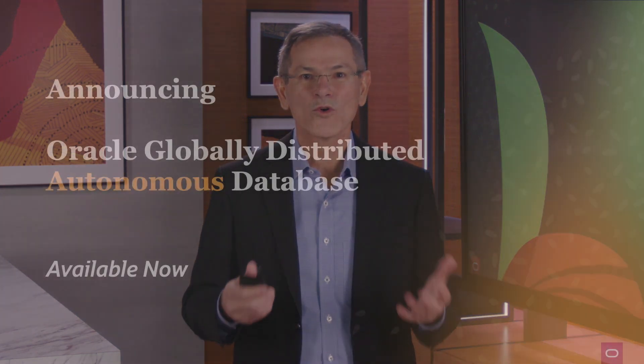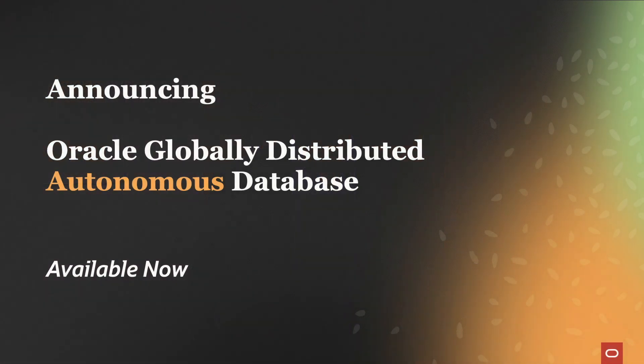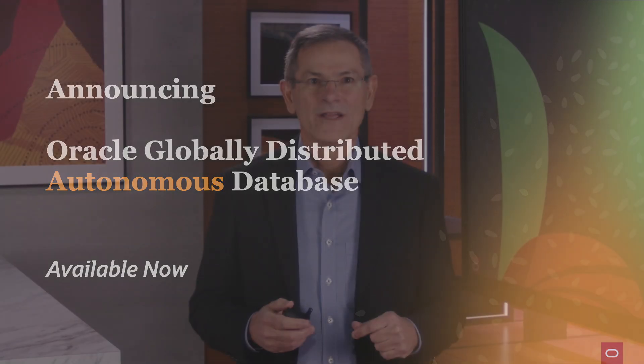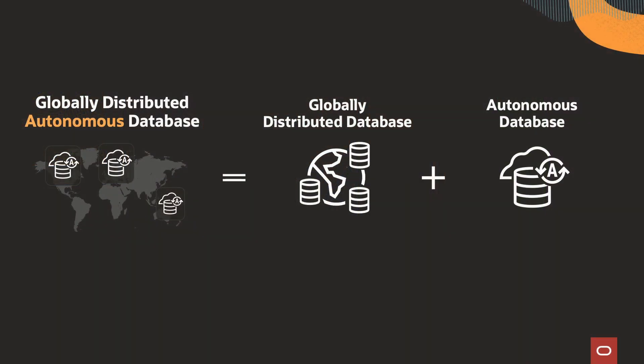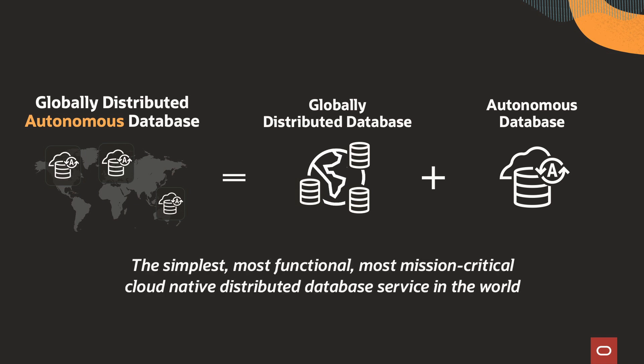Today I want to announce Oracle Globally Distributed Autonomous Database, and it is available today. This adds autonomous management to eliminate the operational complexity of distributed databases and reduce costs. We start with the globally distributed database that's very mature, and we add autonomous database capabilities to create the globally distributed autonomous database. It's the simplest, most functional, and most mission-critical cloud-native distributed database service in the world. Its serverless, elastic, scale-out architecture dramatically lowers costs. In addition, it brings natural language query to globally distributed databases.